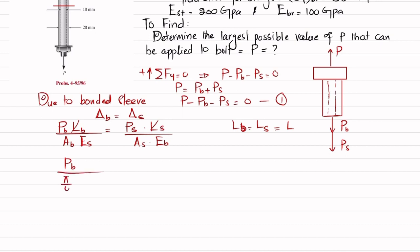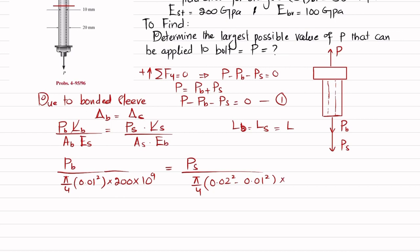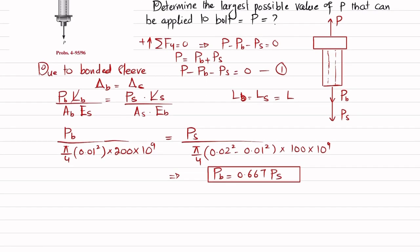After canceling the lengths, we have: Pb divided by area of bolt, which is pi/4 times (0.01)² times E of steel (200 × 10⁹), equals Ps divided by area of sleeve, which is pi/4 times (0.02² minus 0.01²) times E of bronze (100 × 10⁹). Solving this gives Pb equal to 0.667 Ps. This is equation number two.